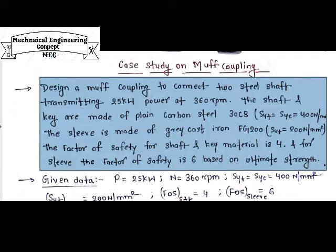Design a MUF Coupling to connect two steel shafts transmitting 25kW power at 360rpm. The shaft and key are made of plain carbon steel 30C8 with Syt and Syc equal to 400 N/mm². The sleeve is made of gray cast iron FG 200 with Sut = 200 N/mm². The factor of safety for shaft and key material is 4, and for sleeve it is 6, based on ultimate strength.